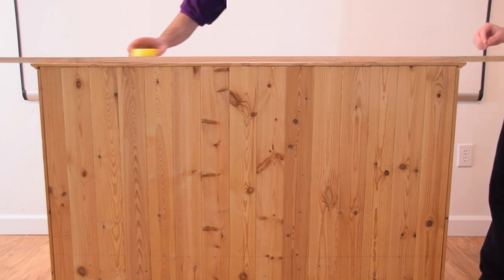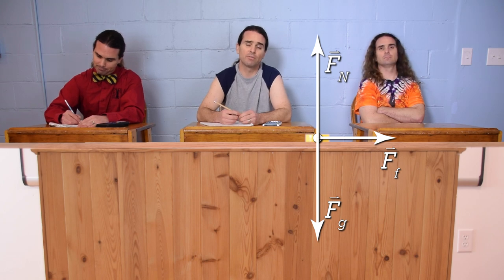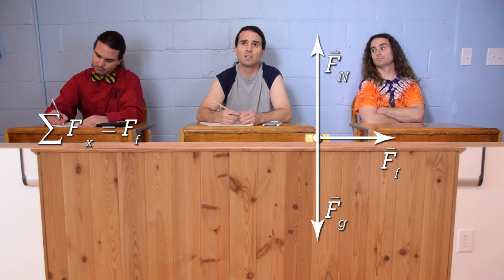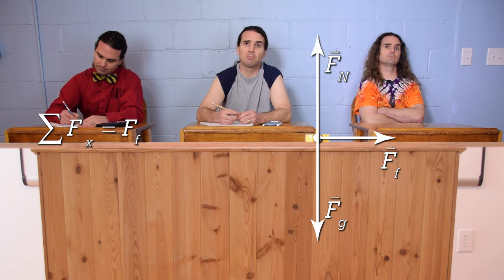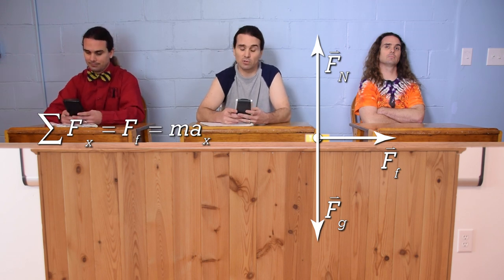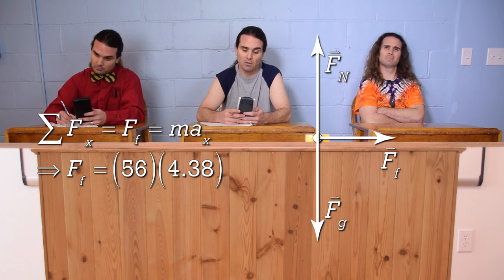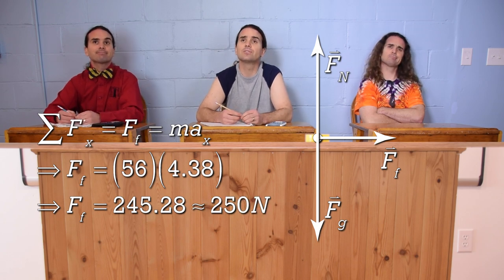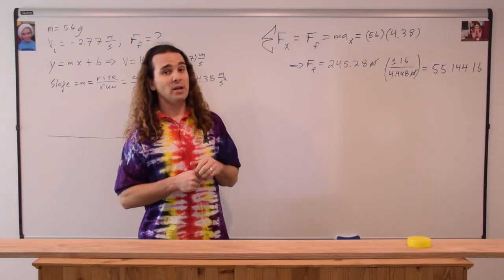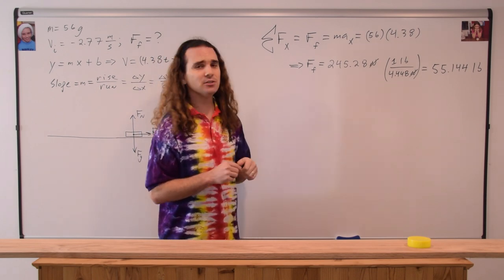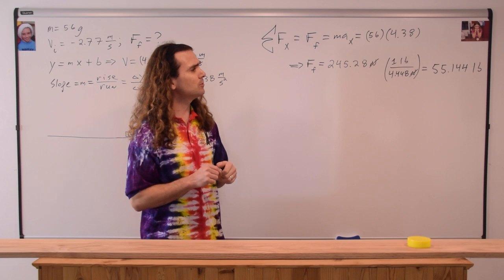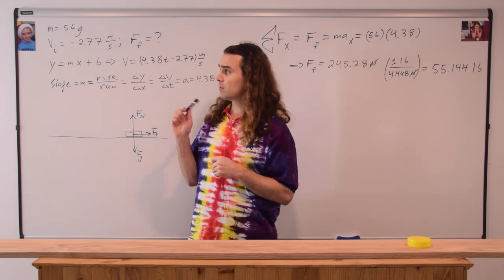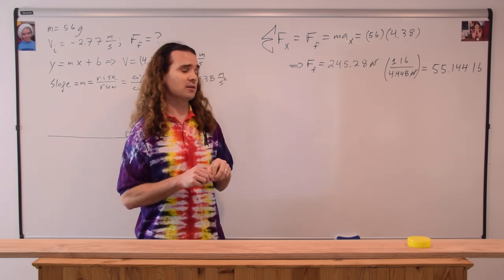Now that we have the correct free body diagram, Bobby, what should we do next? We need to sum the forces in the x direction. So the net force in the x direction is positive force of friction, and that's the only force in the x direction. So that equals mass times acceleration in the x direction. So the force of friction is 56 times 4.38, which is 245.28, or with two sig figs, 250 newtons. We end up with a force of friction of roughly 250 newtons. And because one pound is equal to 4.448 newtons, that works out to be roughly 55 pounds. That would tell you that a force of friction of 55 pounds for something with such a small mass would be unusually large. So we made a mistake. Does anybody know what we forgot to do?